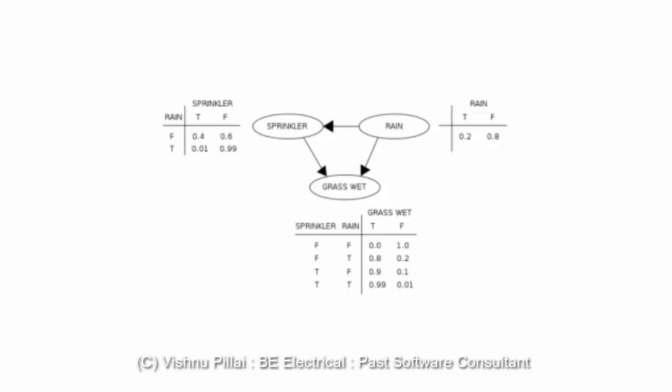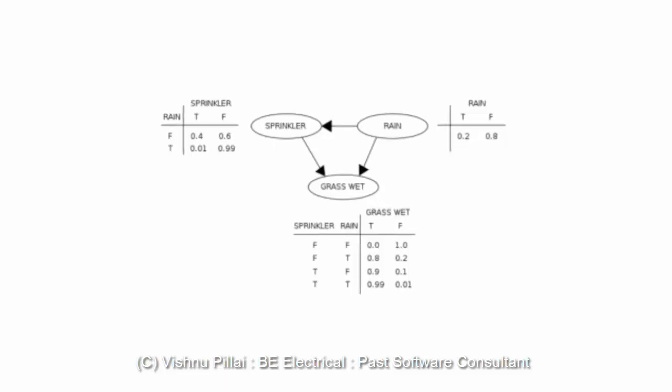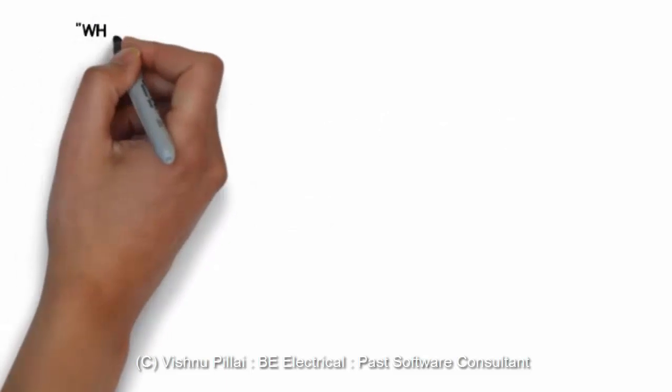Different probabilities based on observation are given. For example, if both are false - the sprinkler is off and there's no rain - the chance that the grass is wet is zero and false is one. Based on that observation, some prior probability is computed.